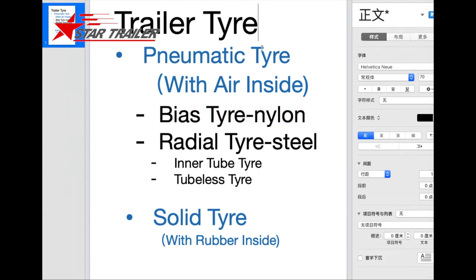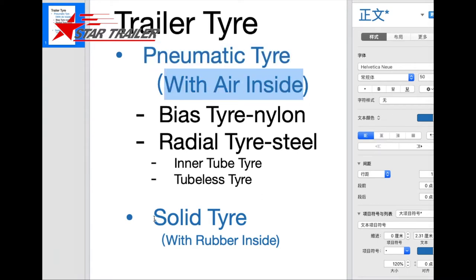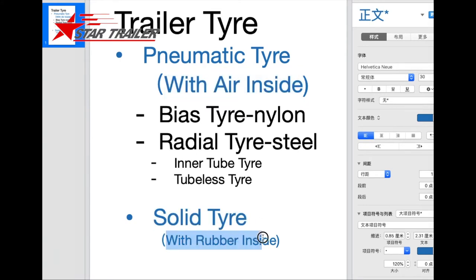The semi-trailer tire, we can categorize them into two. The first one we can call the pneumatic tire — it has air inside. The second one we can call the solid tire — it has no air inside; it's just a rubber cushion.